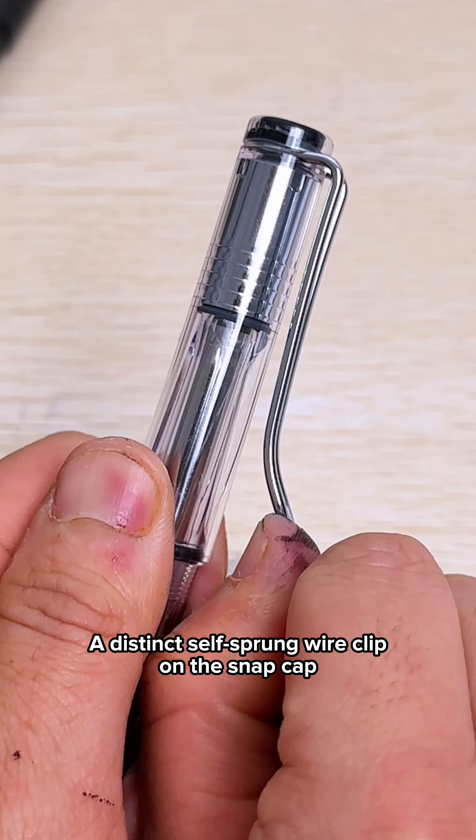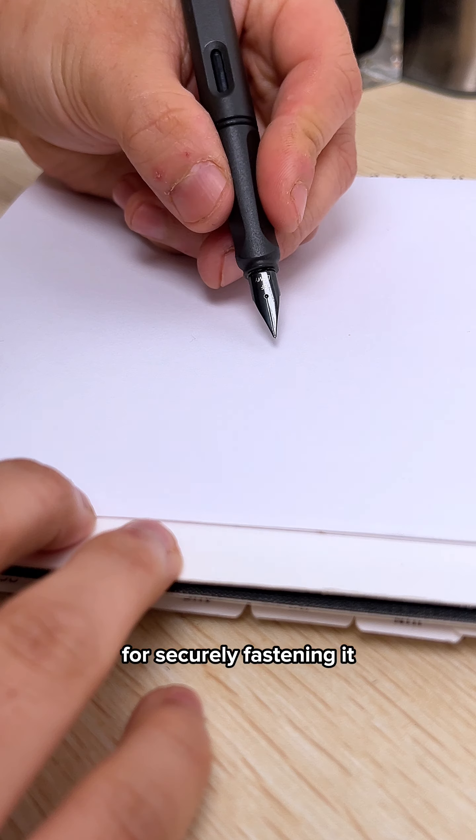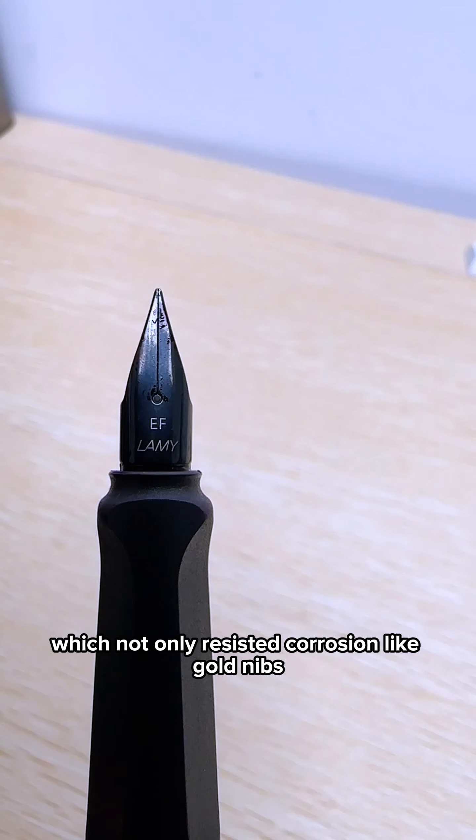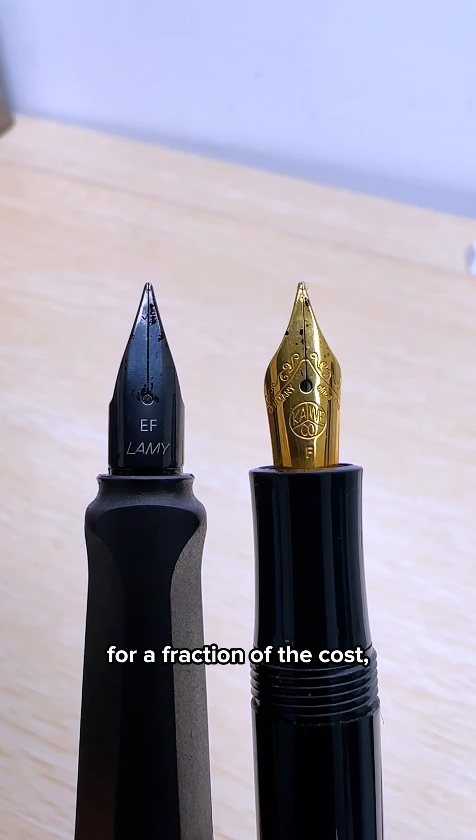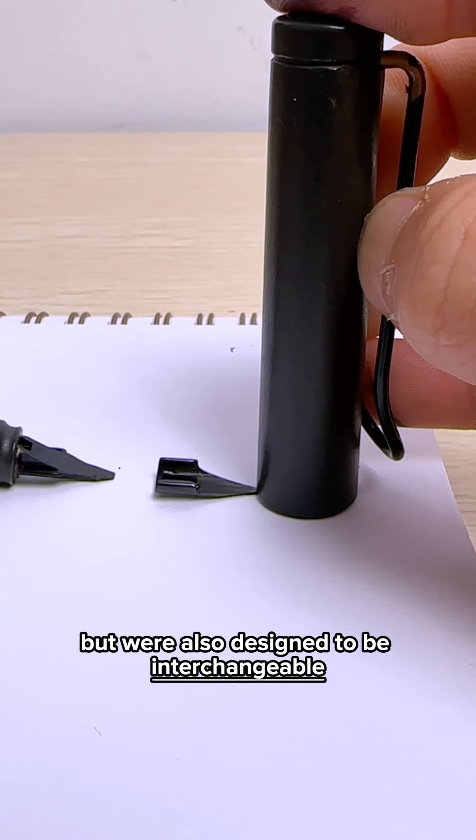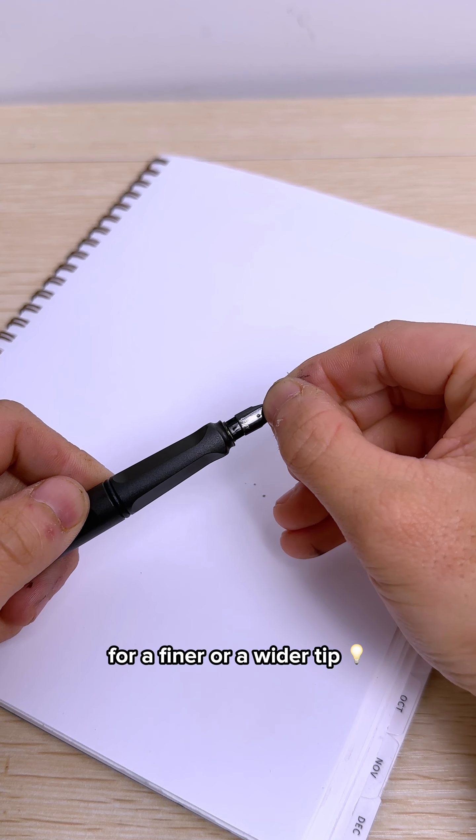a distinct self-sprung wire clip on the snap cap for securely fastening it, stainless steel nibs, which not only resisted corrosion like gold nibs for a fraction of the cost, but were also designed to be interchangeable so you could quickly swap them out for a finer or wider tip